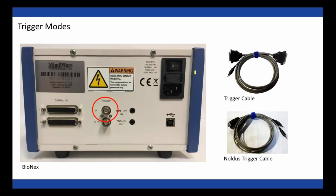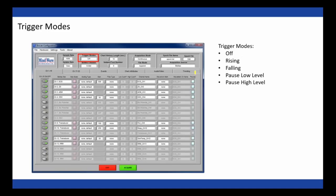Triggers come in through the BionX via the trigger input on the back. We sell cables depending on the system you're using to trigger Biolab, but you could also use a custom cable to attach to the trigger input port. If you're only using Mindware Mobiles for data acquisition, there aren't any triggering options. There are a number of trigger modes available in Biolab because not all systems work the same way — including rising, falling, pause low level, and pause high level.